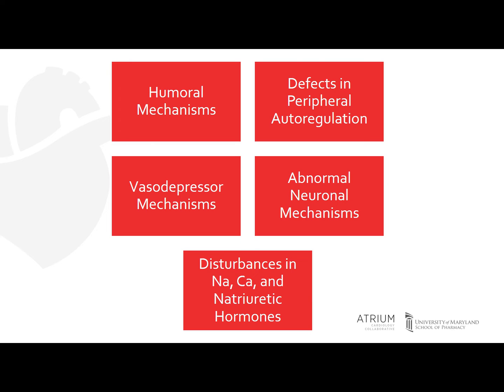Other factors can be abnormal neural mechanisms, defects in peripheral autoregulation, and disturbances in electrolyte and natriuretic hormone balance. Many of these factors are cumulatively affected by the multifaceted RAS, which ultimately regulates the arterial blood pressure.